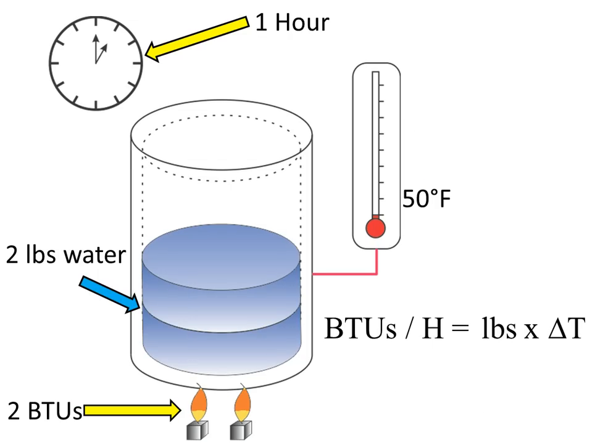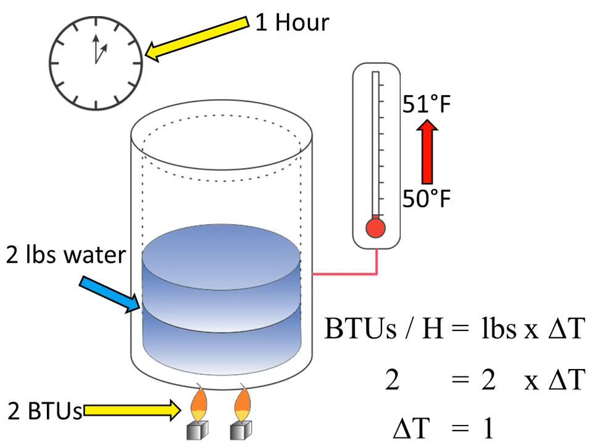Using a second example, we double the amount of heat and double the amount of water. The duration is always 1 hour. Given that the initial temperature of water is 50 degrees Fahrenheit, how many degrees will it increase? Substituting the numbers in the formula: 2 BTUs per hour equal 2 pounds of water multiplied by delta T. Working the math proves that delta T equals 1 degree Fahrenheit, which means the water temperature will increase from 50 degrees Fahrenheit to 51 degrees Fahrenheit.